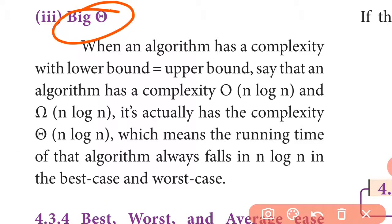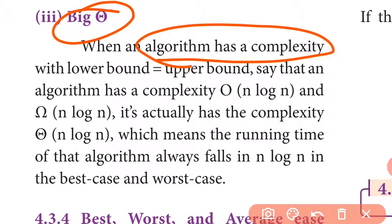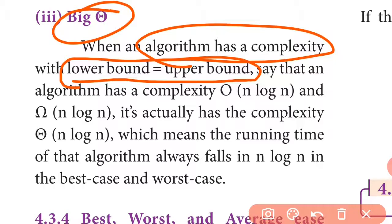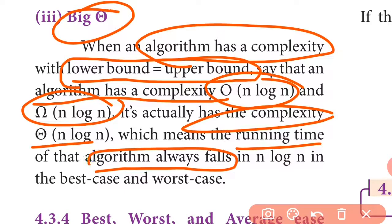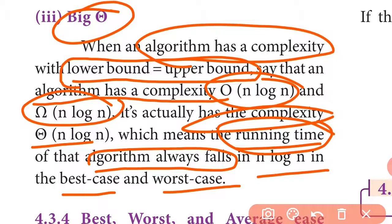When an algorithm has a complexity with lower bound equal to upper bound — for example, an algorithm with complexity O(N log N) and Omega(N log N) — this means the running time of the algorithm always falls within N log N in both the best case and the worst case.